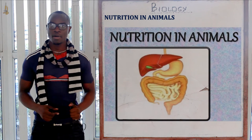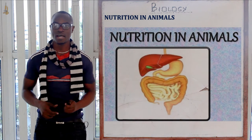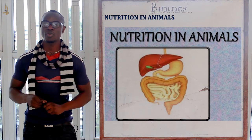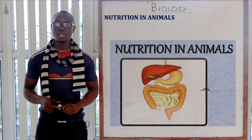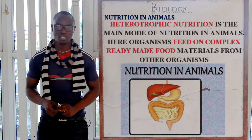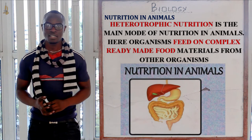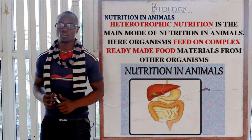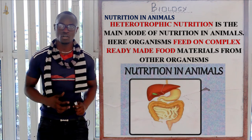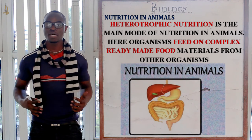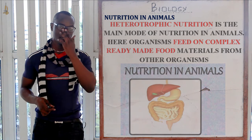Welcome again to this class where we are going to discuss nutrition in animals. We are done with nutrition in plants, now we are in nutrition in animals. The main nutrition in animals is heterotrophic nutrition, whereby the organisms feed on complex food materials obtained from other living organisms. It comprises most mammals in heterotrophic nutrition.